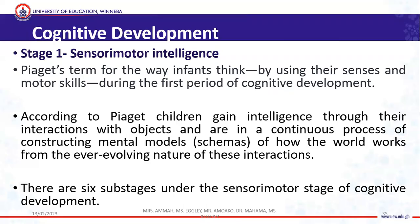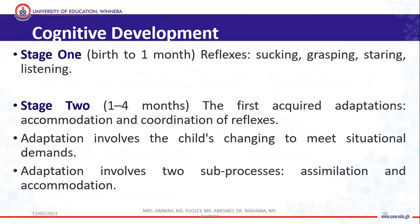Under the sensorimotor stage, Piaget identifies six sub-stages. The first, from zero to one month, involves reflexes. Between about one to four months, the child has what we call primary adaptations. Adaptation involves the child changing to meet situational demands, and it involves two processes: assimilation and accommodation.